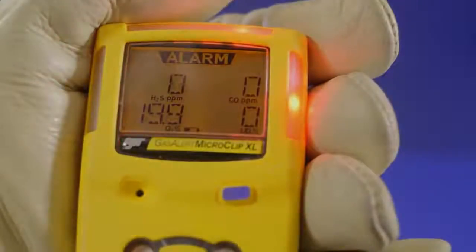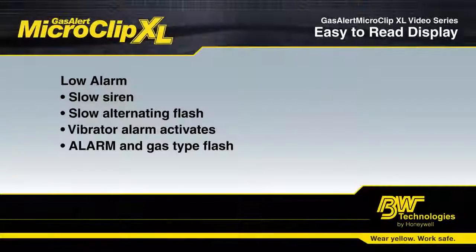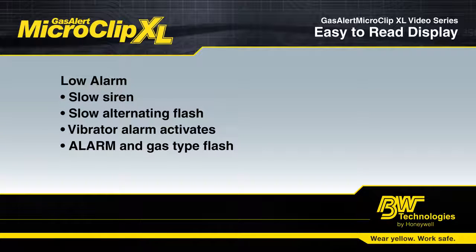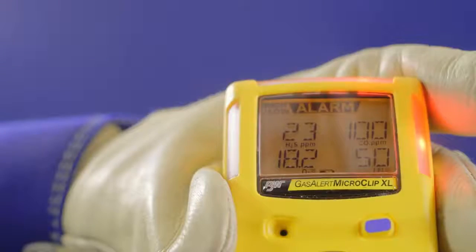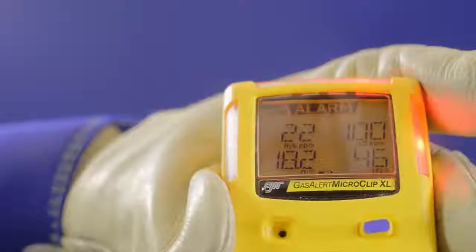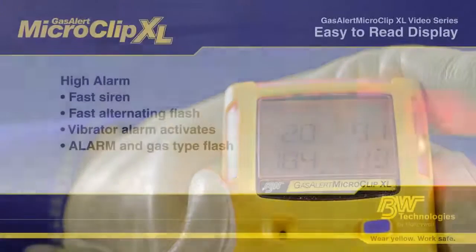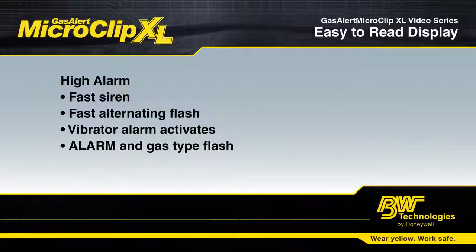The alarm type will also appear. Low alarms are instantaneous alarms. Take appropriate actions in line with your on-site procedures in the event your detector goes into low alarm. High alarms are also an instantaneous alarm and are a secondary warning level.